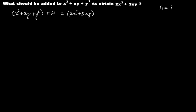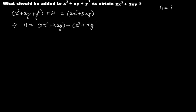Always keep expressions within brackets so that you don't get confused — we usually get confused with negative signs if we don't use brackets. So A becomes: take x squared plus xy plus y squared to the right side, giving 2x squared plus 3xy minus the quantity x squared plus xy plus y squared.